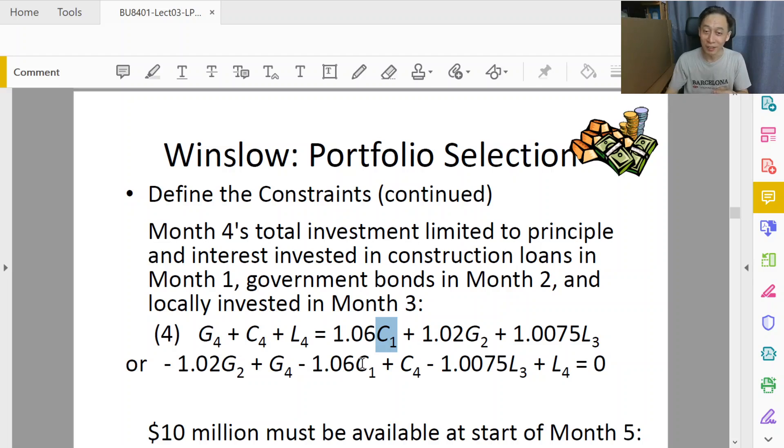C1, which was invested at the start of the first month, you can tell that from the suffix one here, will now come back after a three-month interval to allow us to consider splitting into the start of the fourth month investment. That comes with six percent interest. In this manner, we're able to tell our model that C1 takes three months to mature, G1 and G2 took two months to mature, and all the L's take one month to mature.